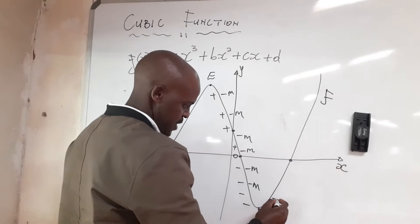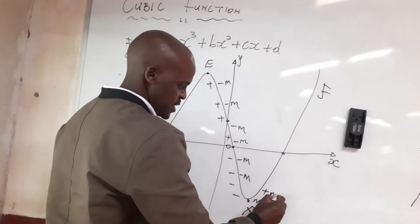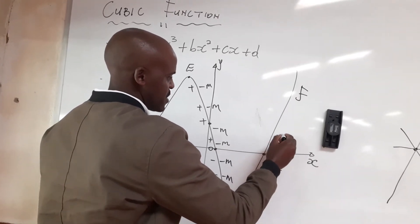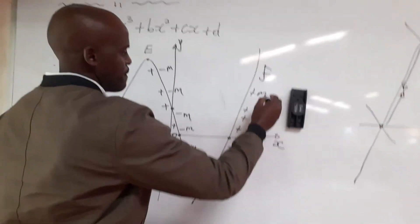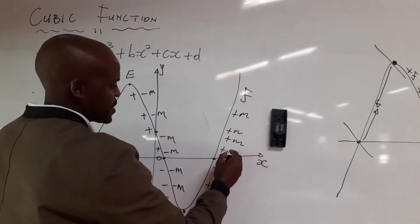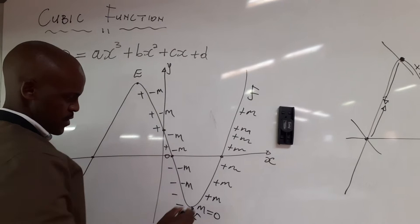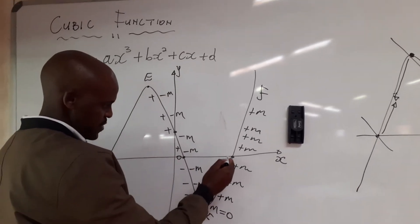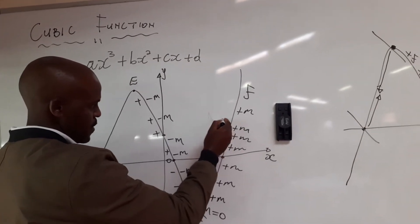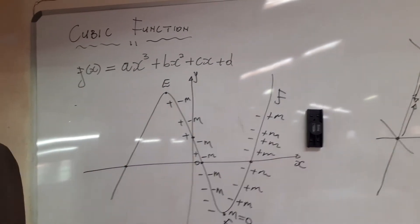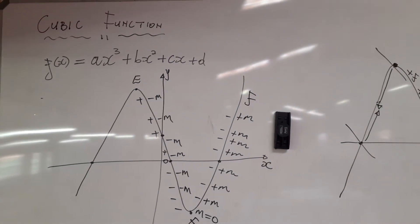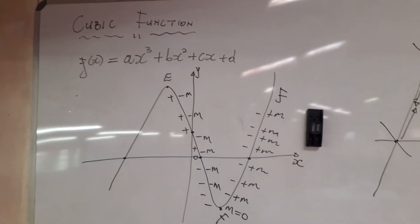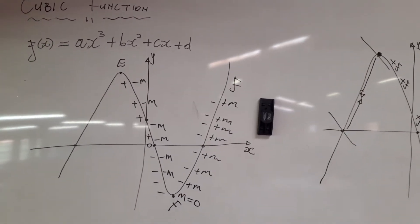Here the graph is going up, so the gradient is positive — it's plus. That's our gradient. Our y is negative, negative. Remember we need the values of x that will give us a positive answer if you are multiplying the gradient and y.